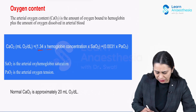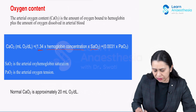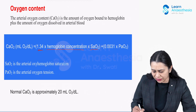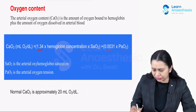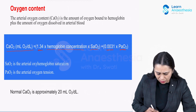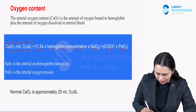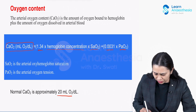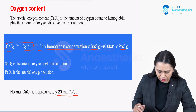The formula is: 1.34 multiplied by hemoglobin concentration multiplied by arterial saturation, summed with the solubility coefficient of oxygen multiplied by the oxygen tension in the blood. This gives the total oxygen content of arterial blood, which comes out to be 20 ml of oxygen per deciliter of blood.